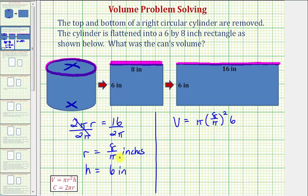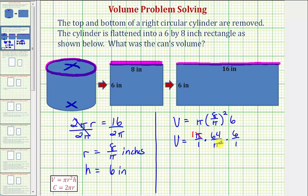It's not a good idea to round r, find the volume, and round again, because that would give us more error. So we have the volume equal to pi over one times eight over pi squared, which is 64 divided by pi squared, times six over one. Notice we have a common factor of pi: pi over pi squared simplifies, so this pi simplifies to one and pi squared simplifies to just pi to the first. The volume equals 64 times six, which equals 384 divided by pi, in units of inches cubed.